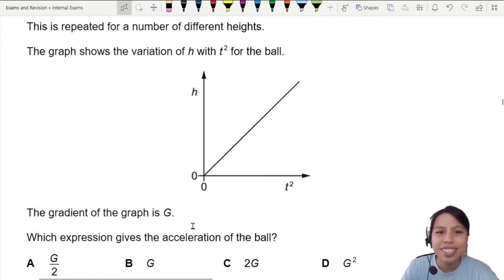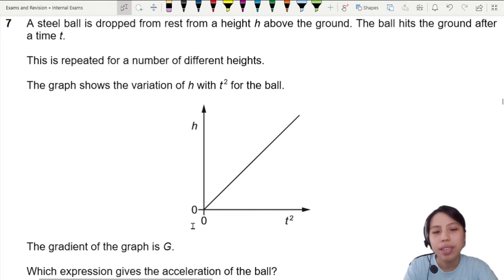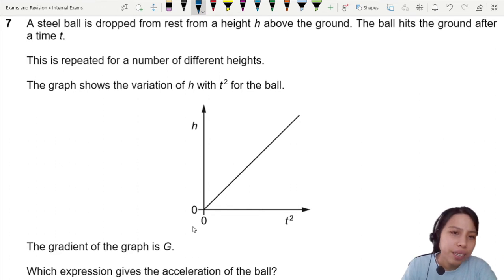Which expression gives the acceleration of the ball? Okay, I think I know what they're asking. This is an experiment. In experiments we usually draw graphs, do linear fits, draw a straight line, plot points. Can we think of an equation that links together h or distance traveled with t²?